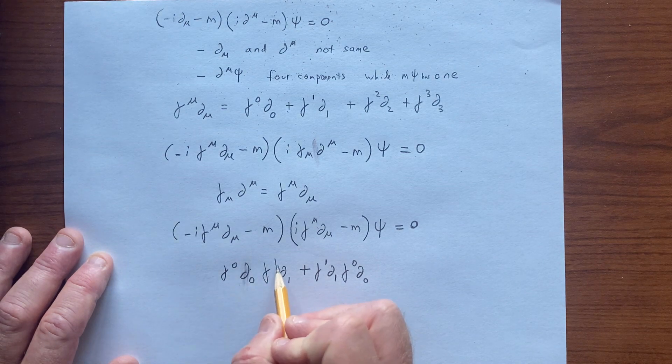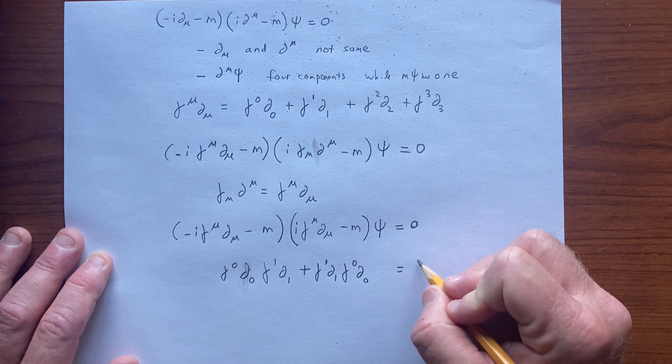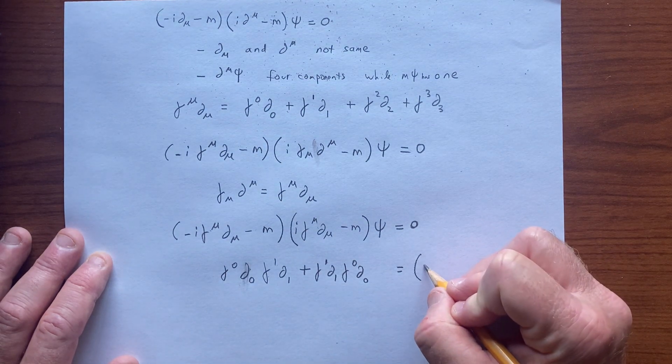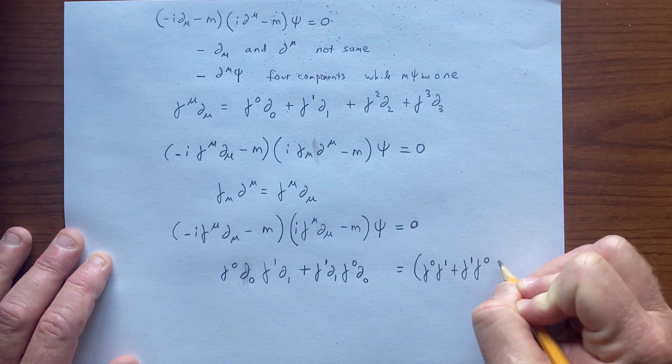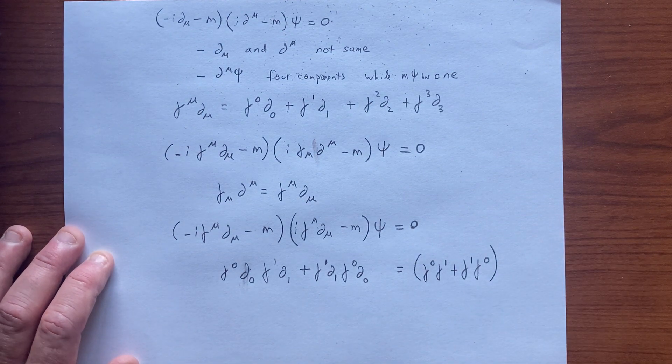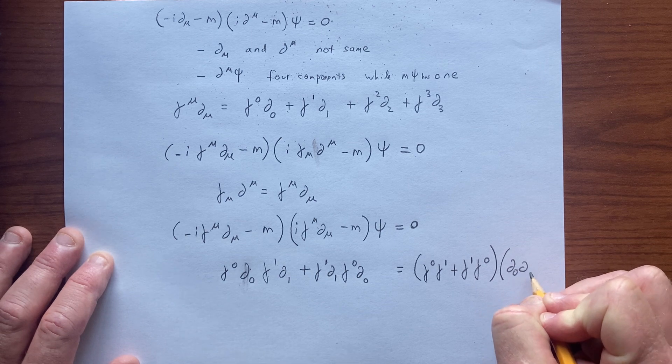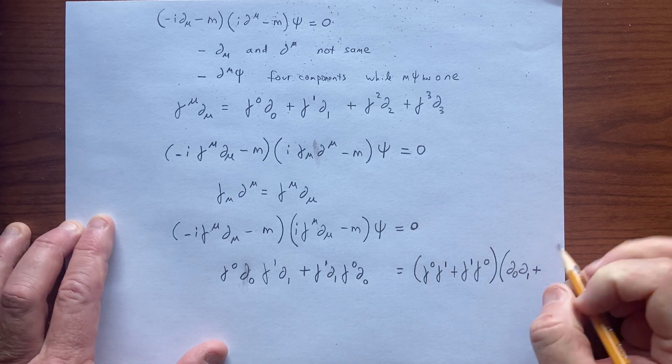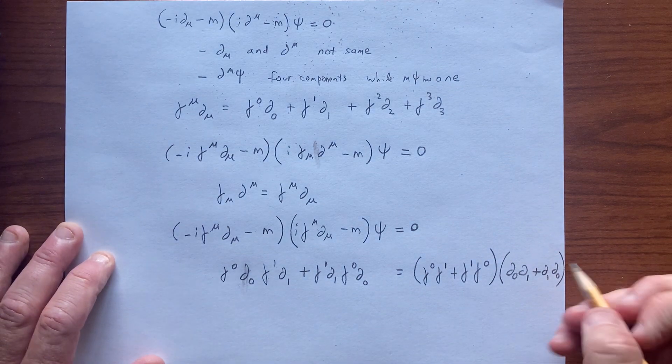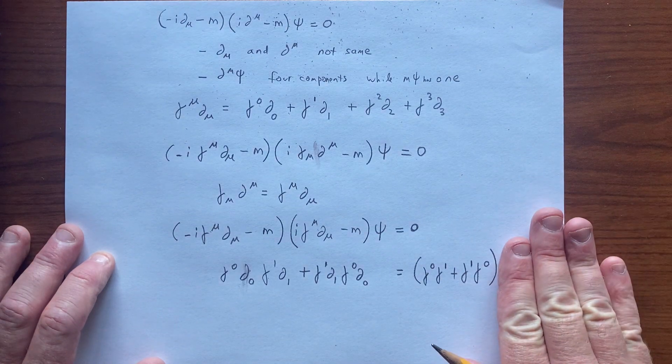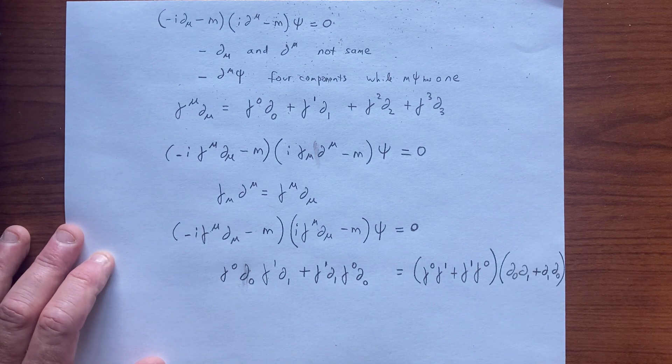So we can write this as pulling out the gammas: gamma^0 gamma^1 plus gamma^1 gamma^0. That leaves d/d0 d/d1 plus d/d1 d/d0. Regardless of space and time commuting, we could just write a factor of two there.